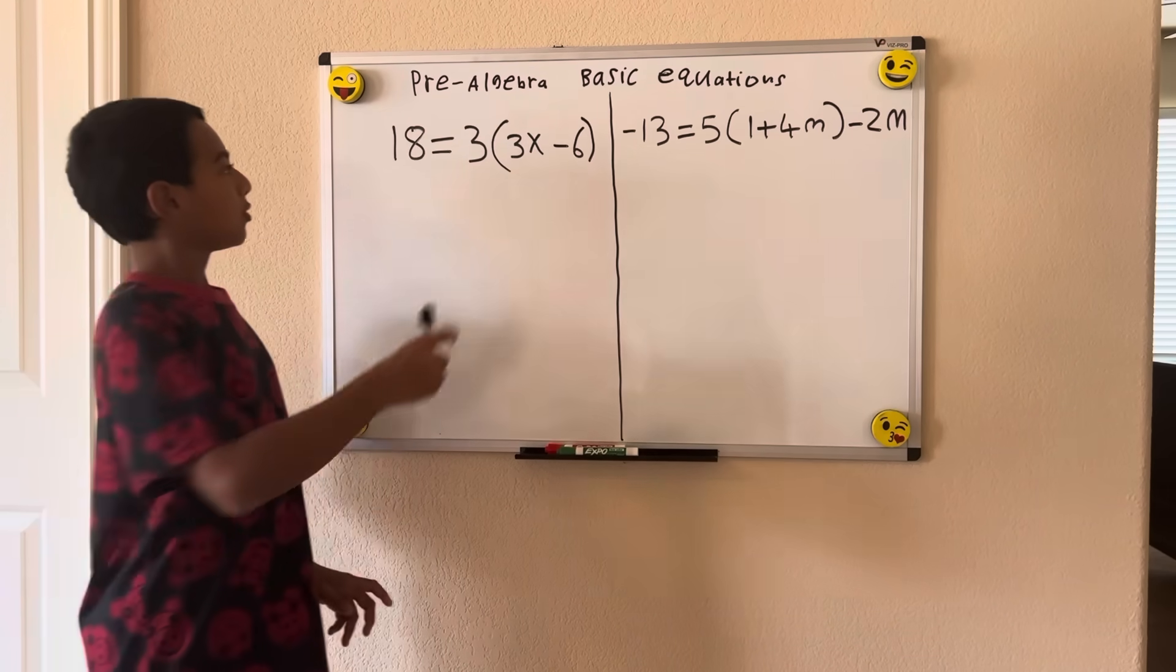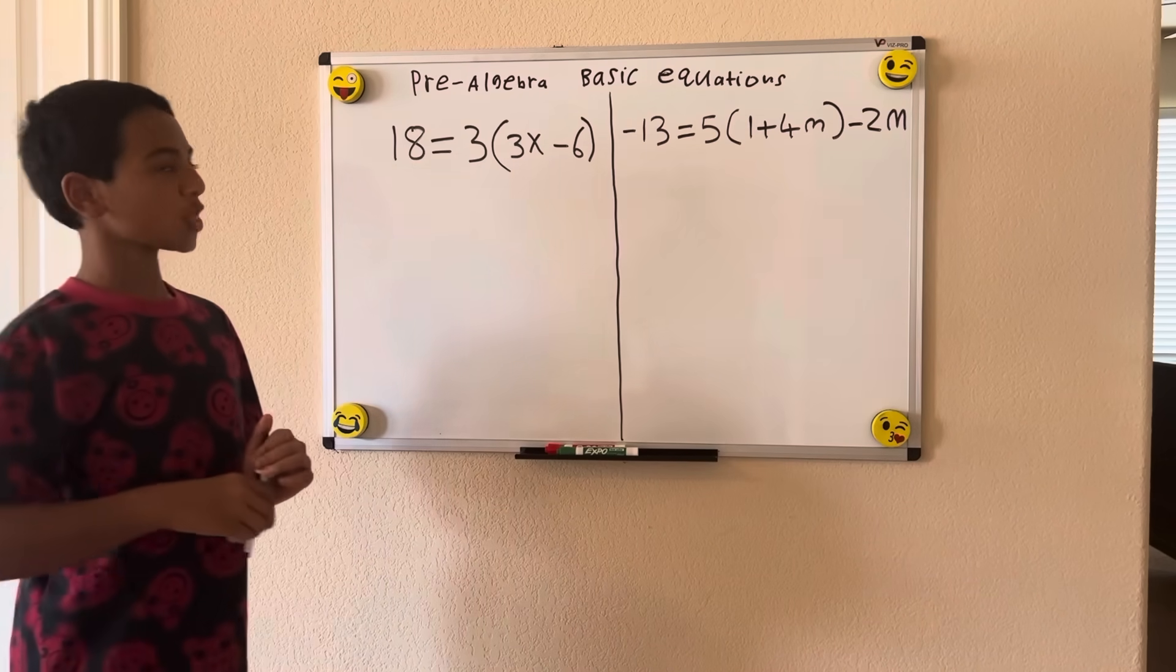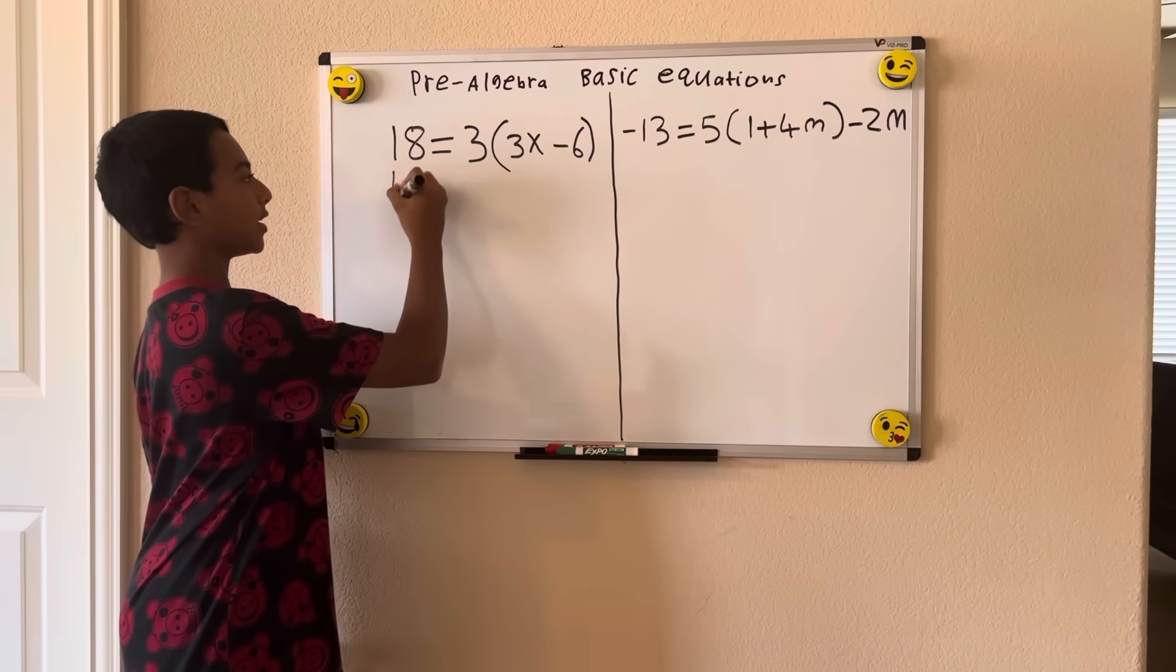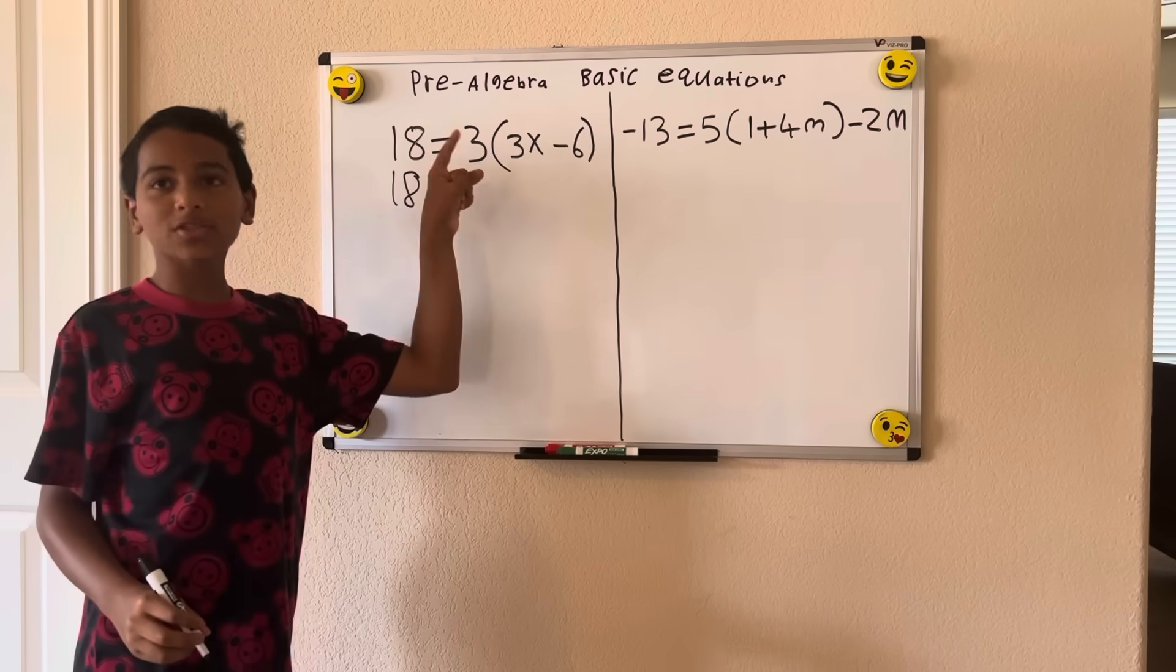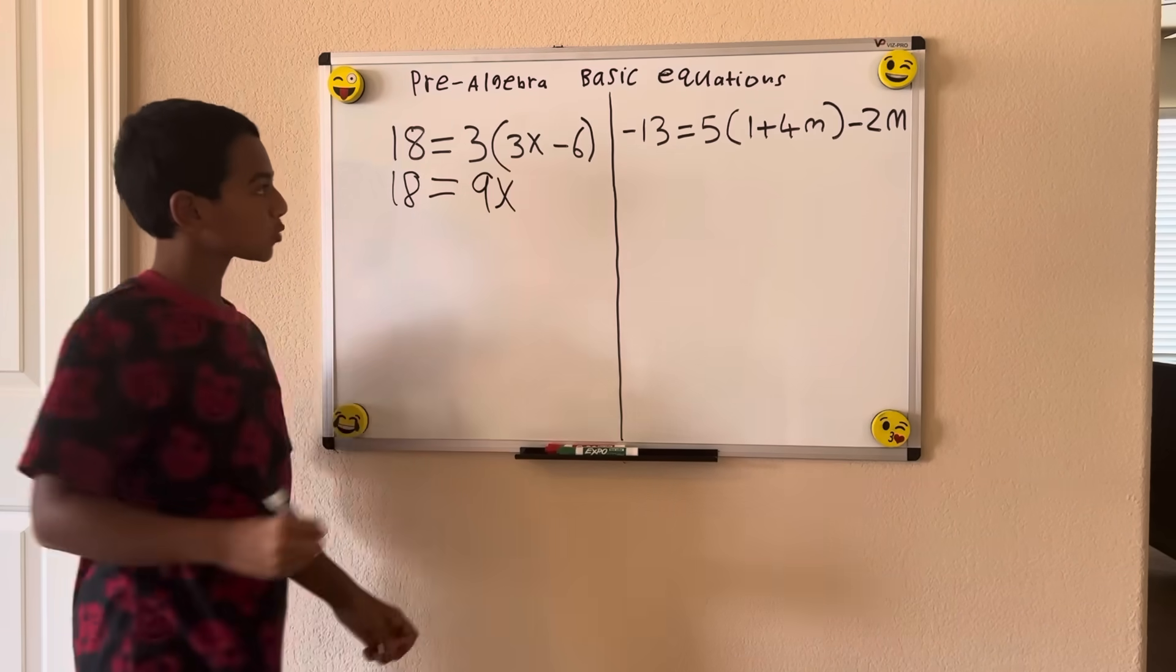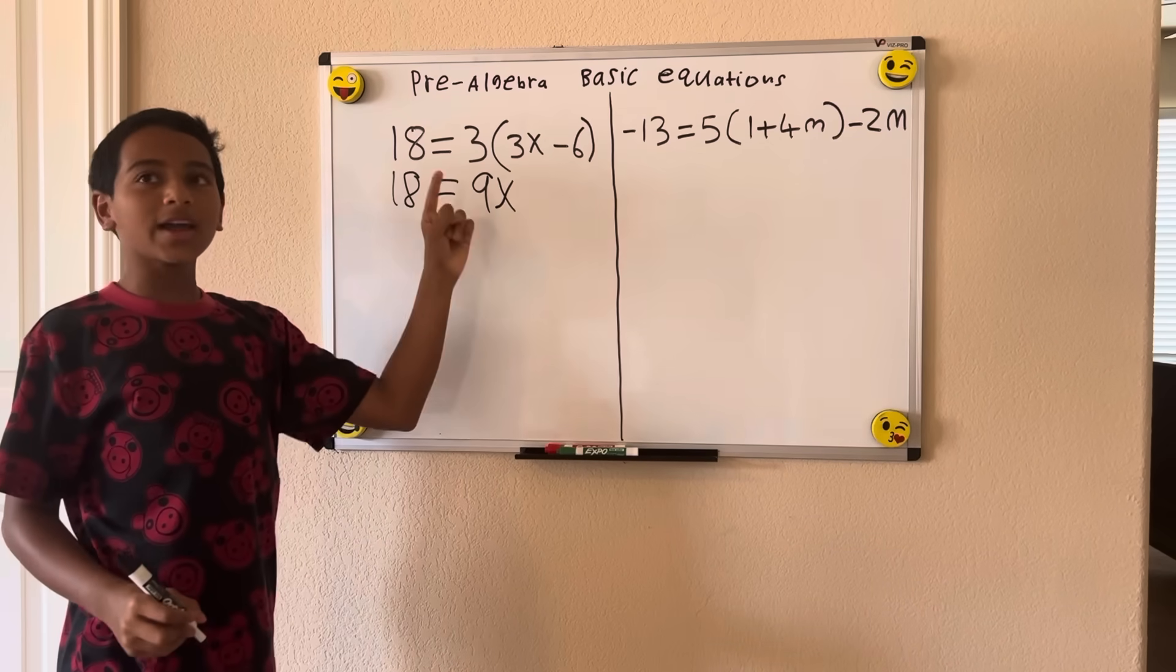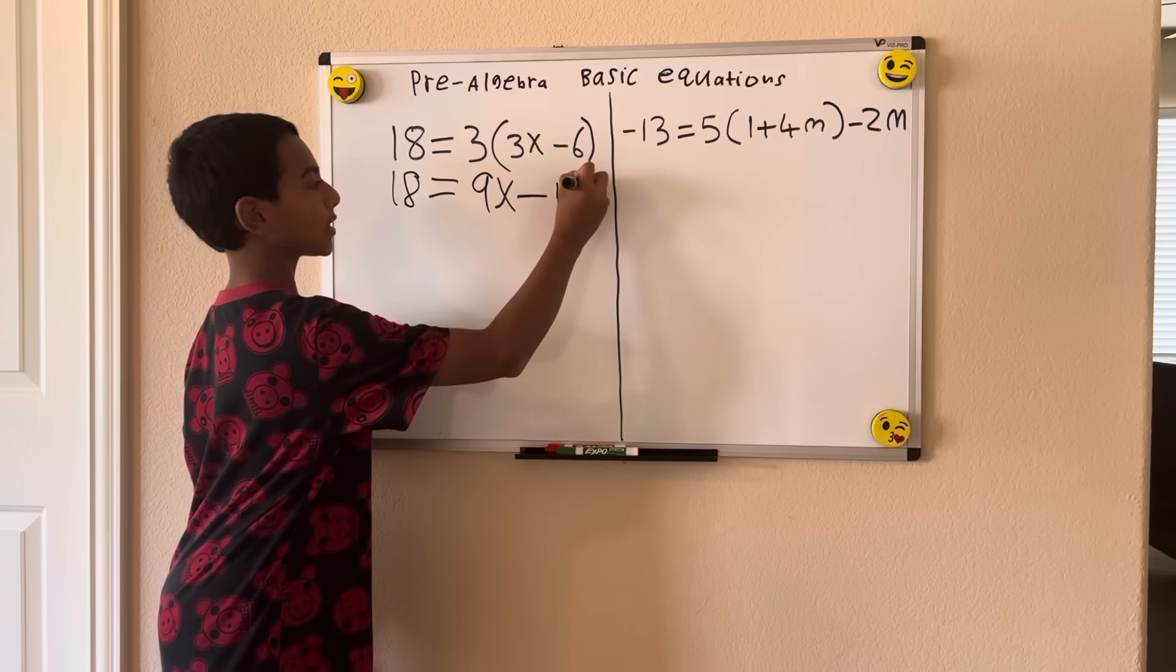Well, we know that we have parentheses, so we're going to apply the distributive property. 18 equals 3 times 3x is 9x, so we're going to have 9x minus 6 times 3 is minus 18, so 9x minus 18.